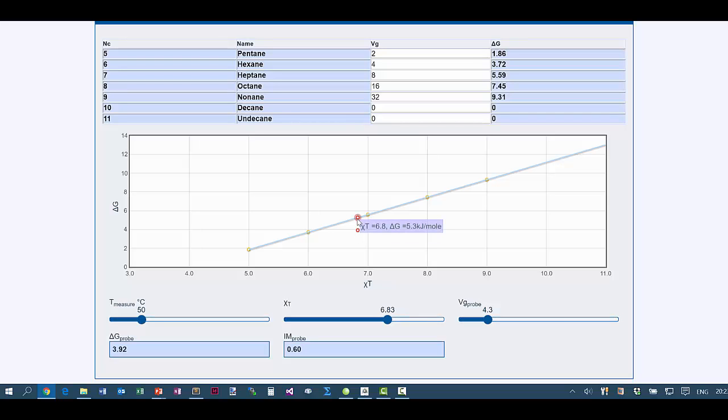We know the delta G of what it should be on a smooth surface, and because this is lower, we know the morphology index is 0.6. This is a relatively rough surface.